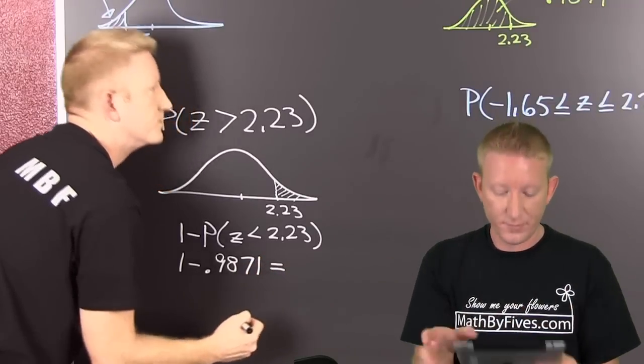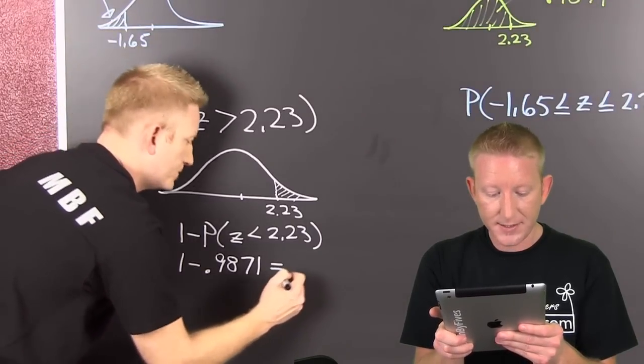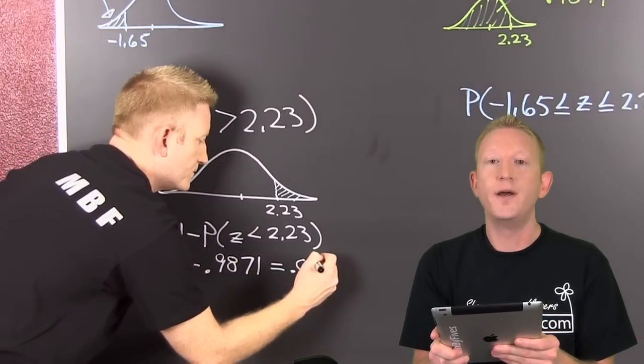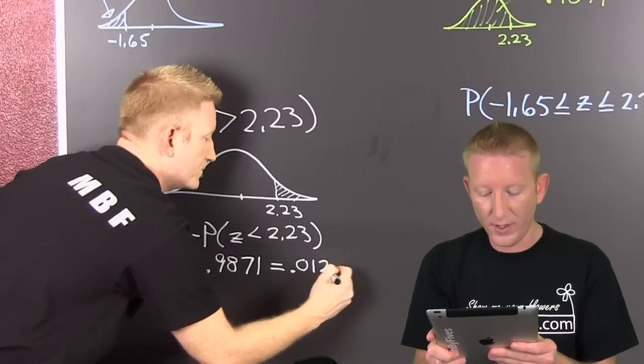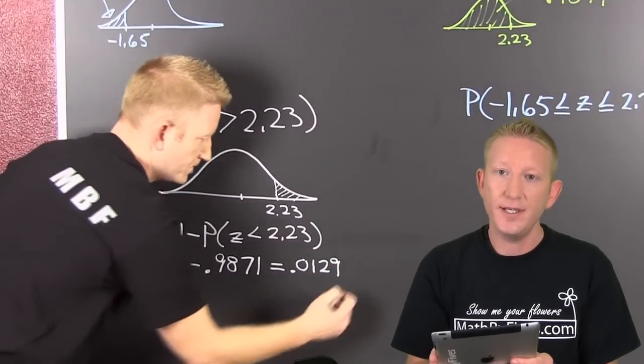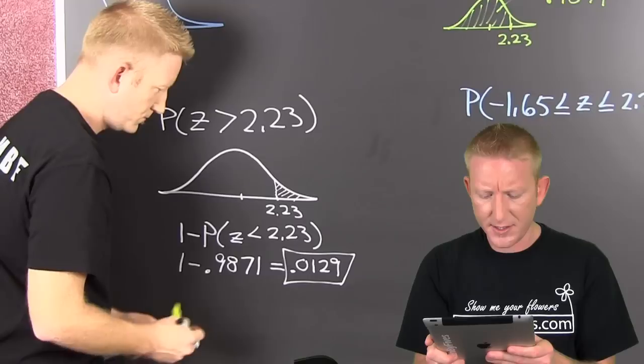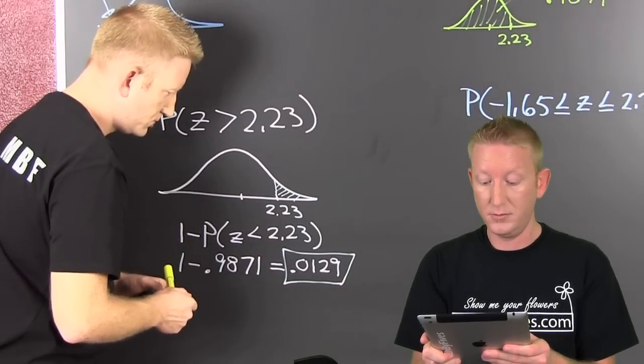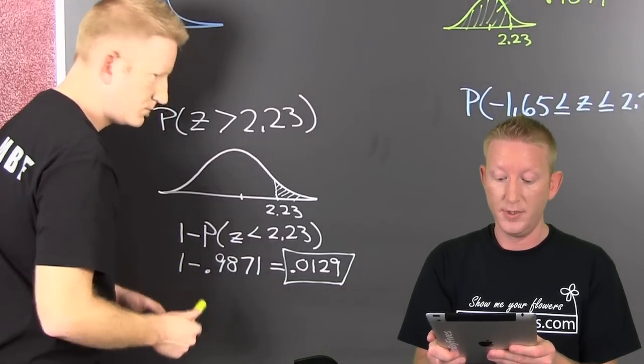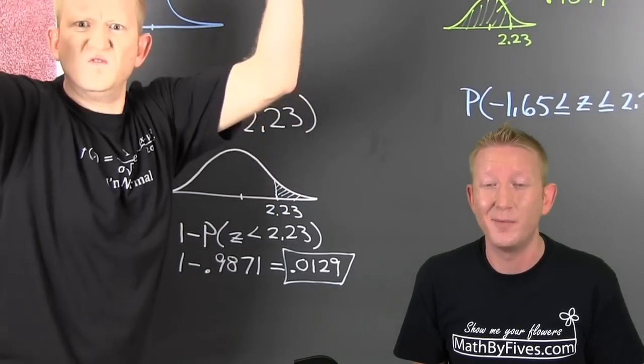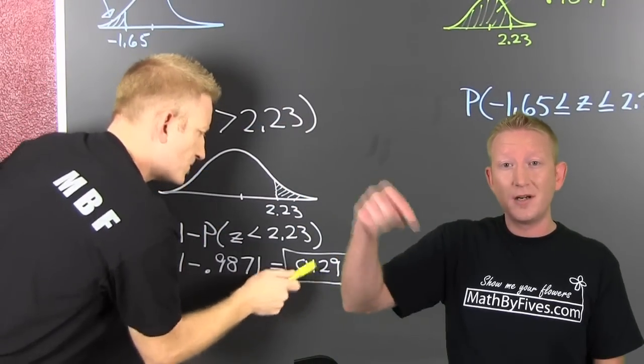The area to the left was 0.9871, so 1 minus 0.9871 is going to give us the area to the right of that value, which is 0.0129. I kind of just did that in my head. If I'm wrong, comment in the comments below.